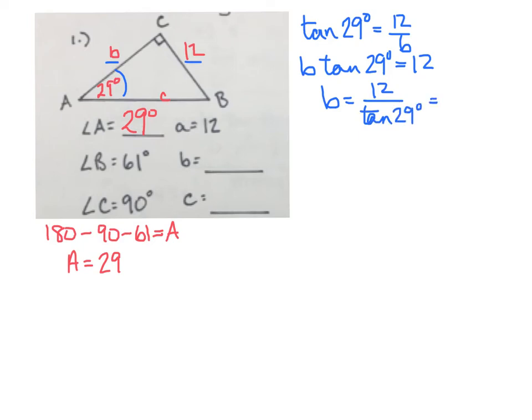Now I have a nice little expression. So we go ahead, type that into the calculator. Make sure you're in degree mode. Then we get an answer of 21.648. So that's the length of b, 21.648.